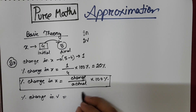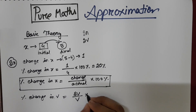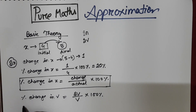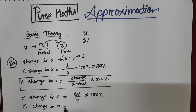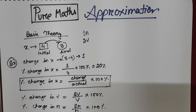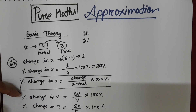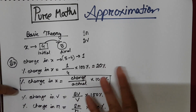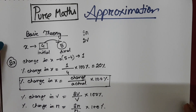For example, percentage change in volume will be del v divided by actual v, multiplied by 100 percent. Similarly, percentage change in radius will be del r divided by actual r, multiplied by 100 percent. Depending on the problem, we can derive a formula for finding the percentage change in any parameter.